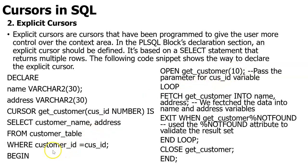Once the row is identified, it will select the name and address columns from the customer table and check whether the customer ID matches. If so, it will return the result. If it is not going to fetch anything, it will give an error: NOT FOUND. Then you will enter the loop, close the cursor, and end. This is how your implicit and explicit cursor works — a cursor is a temporary area where you select particular data from the original table and access that temporary area for all updates and operations. Thank you.